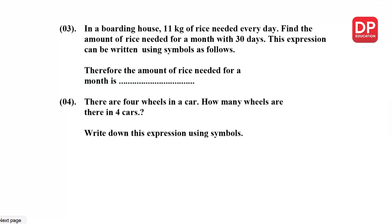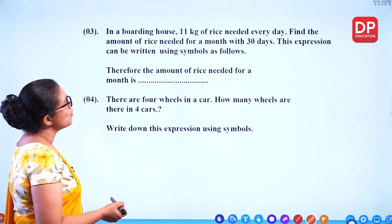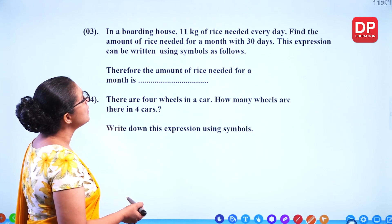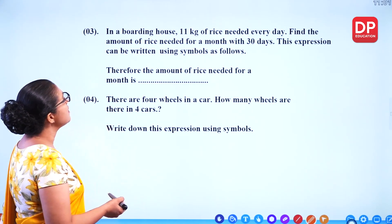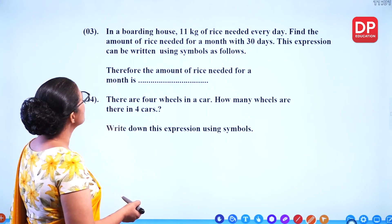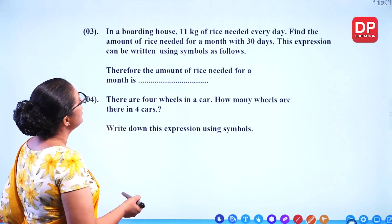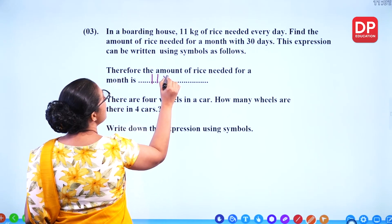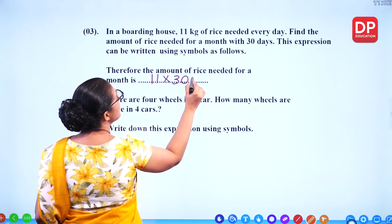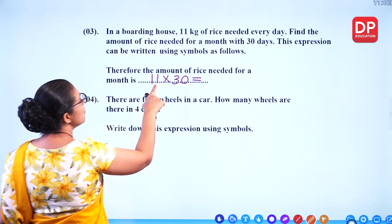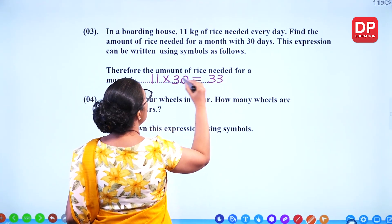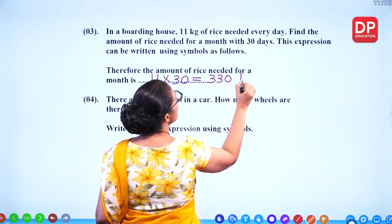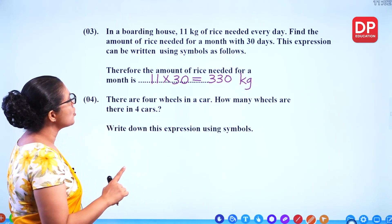In a boarding house, 11 kilograms of rice are needed every day. Find the amount of rice needed for a month with 30 days. This expression can be written using symbols as: 11 kilos times 30 days equals 330 kilograms. So this is an expression using symbols.